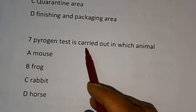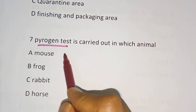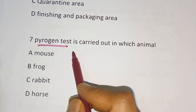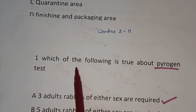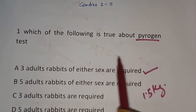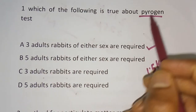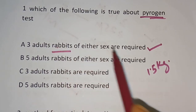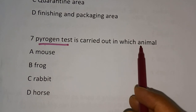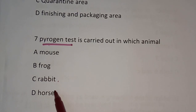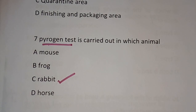Question 7: Pyrogen test is carried out in which animal? Options: mouse, frog, rabbit, horse. The correct answer is rabbit, option C. As established in question 1, three adult rabbits of either sex are used for the pyrogen test.